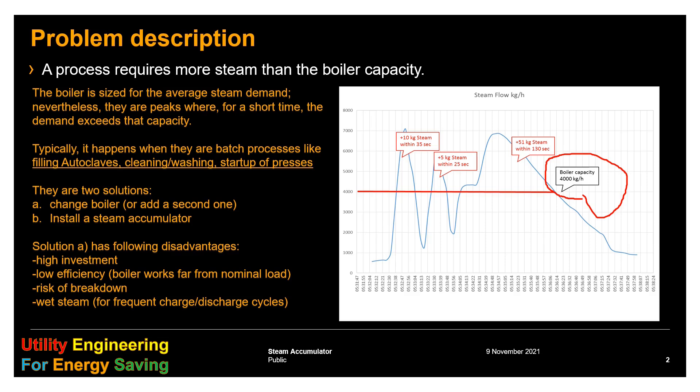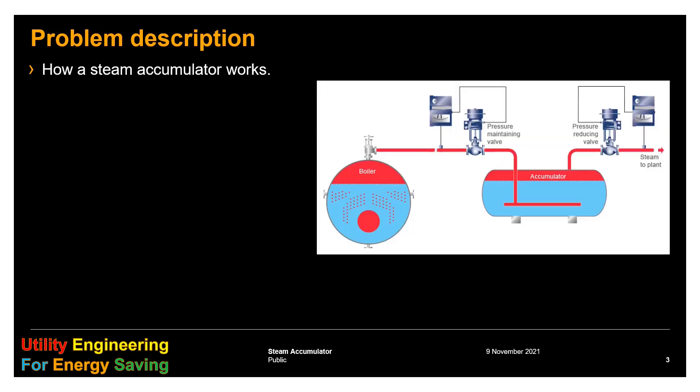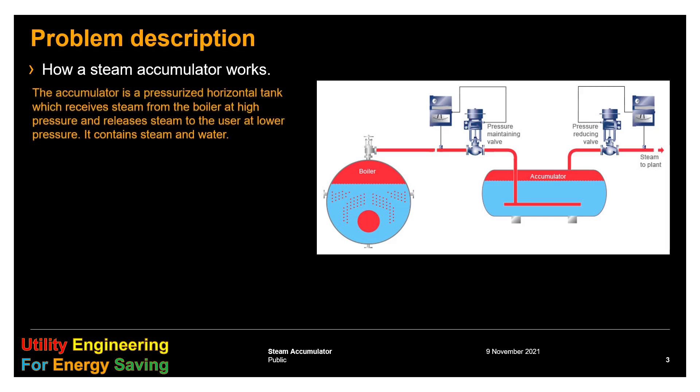How to overcome the problem? The solution is to use a steam accumulator. It is a pressurized horizontal tank which receives steam from the boiler at high pressure and releases steam to the user at lower pressure, and it contains both steam and water.